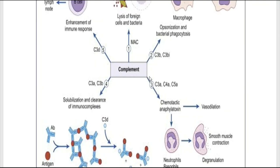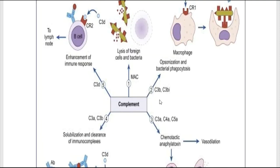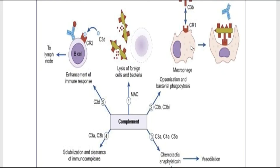For opsonization and phagocytosis: C3b binds to or coats the surface of antigens or the pathogen and activates phagocytic cells. These proteins bind to specific receptors on the phagocytic cells and the pathogen gets engulfed. Opsonization is the process of coating, and phagocytosis is the engulfing — the complement acts in this manner.